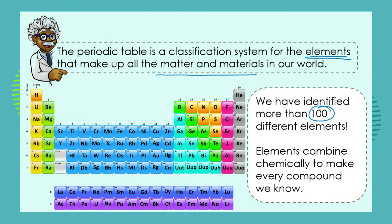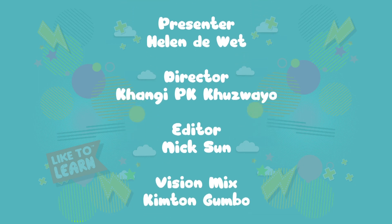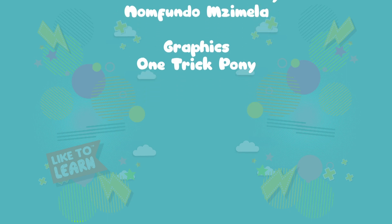That make up all the materials in our world. We have identified more than a hundred different elements — in fact, we're at 118 right now. And we know that these elements combine chemically to make every single compound that we know. Isn't this periodic table quite an amazing way of sorting out things around us in the world, so that we can be sure of properties and characteristics, and understand how the elements are going to react with each other in order to create the thousands and thousands of compounds that exist — not only here on Earth, but even out on other planets and in space.